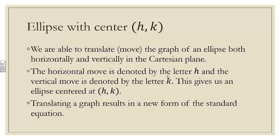This gives us an ellipse centered at h, k — remembering that we are referring to an x, y coordinate pair. H is the x value and k is the y value. When we translate a graph, it results in a new form of the standard equation.